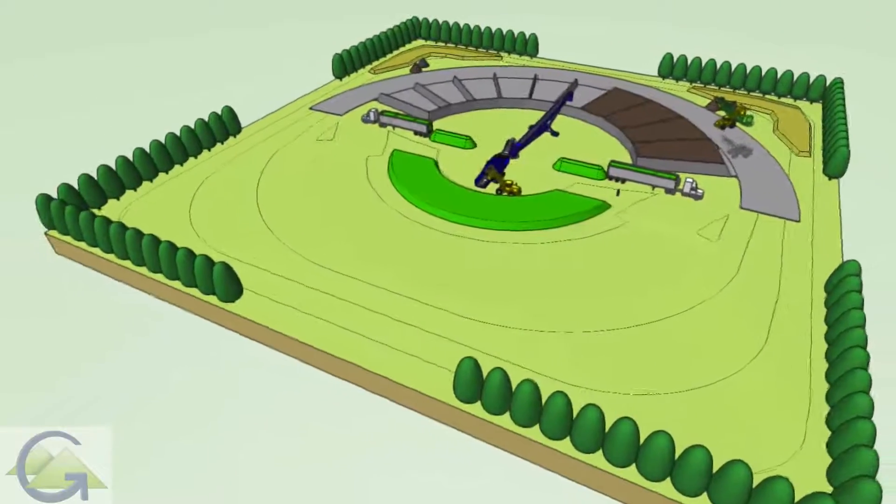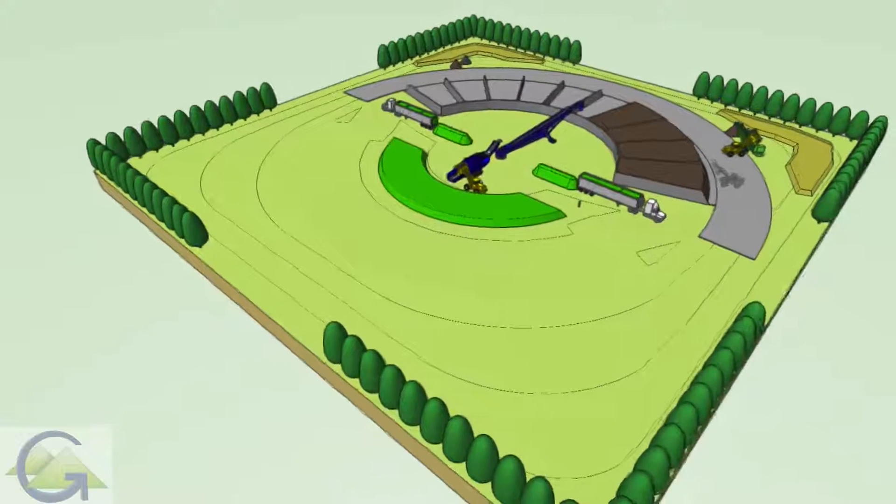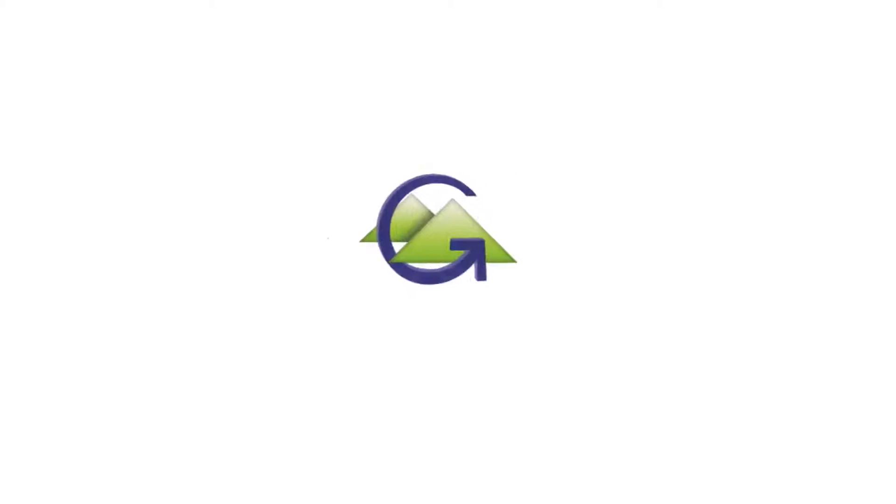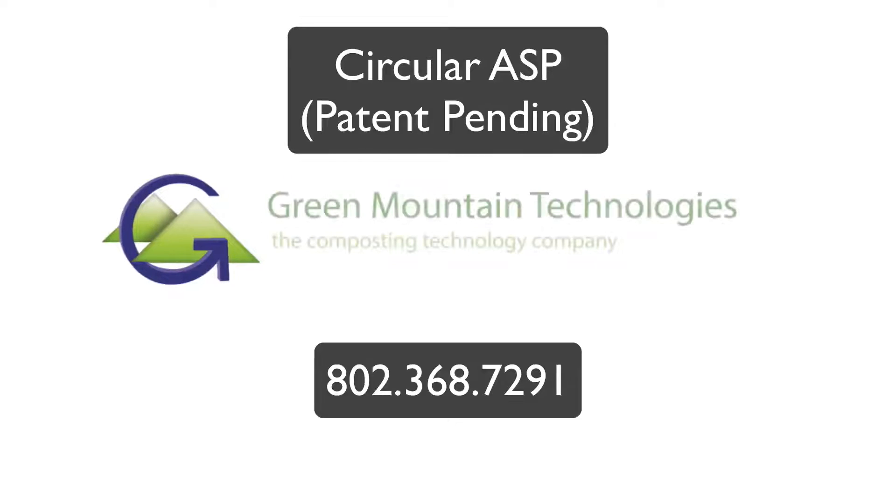The site perimeter is landscaped to reduce visual impacts. For more information, call Green Mountain Technologies at 802-368-7291.